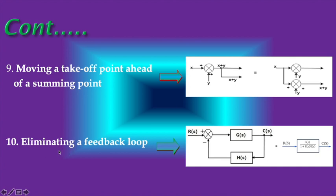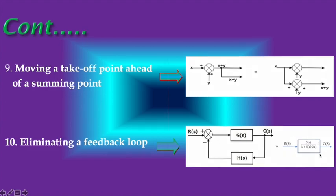Eliminating a feedback loop: This is the closed-loop system. The transfer function of the closed-loop system is G(s) by 1 plus G(s) into H(s). Here, this is output and this is input. So, for this diagram, always write down this equation.